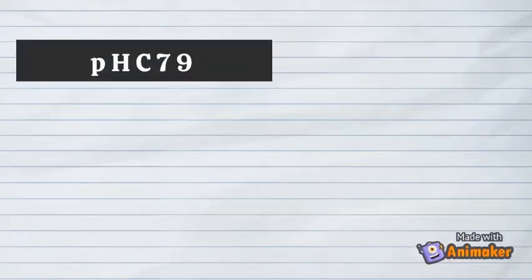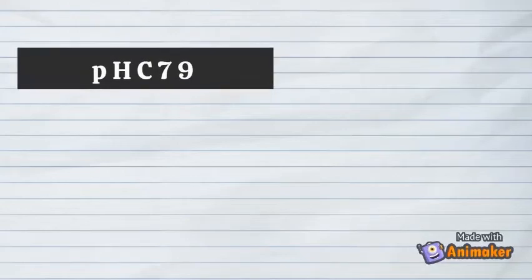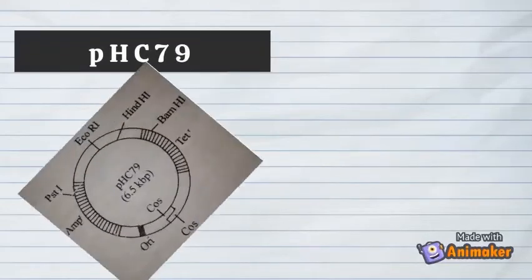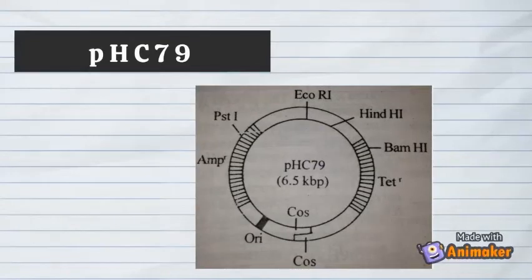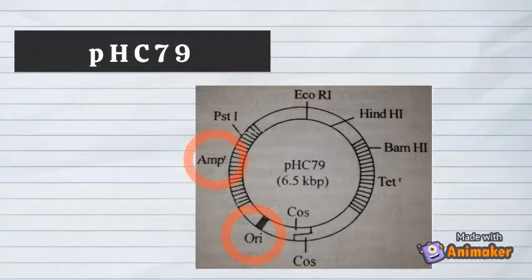The next example of a cosmid is pHC79. This cosmid is also constructed from pBR322 and cos sites of lambda DNA. The size of this cosmid is 6.5 kbp. It can carry DNA fragments up to 40 kbp. The origin of replication and two marker genes — the ampicillin resistance gene and tetracycline resistance gene — are derived from pBR322.